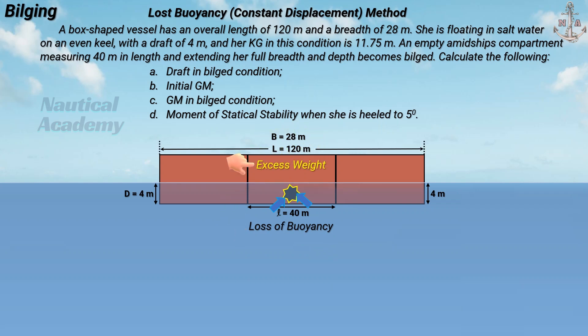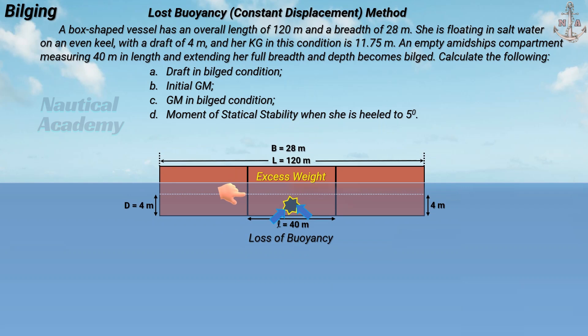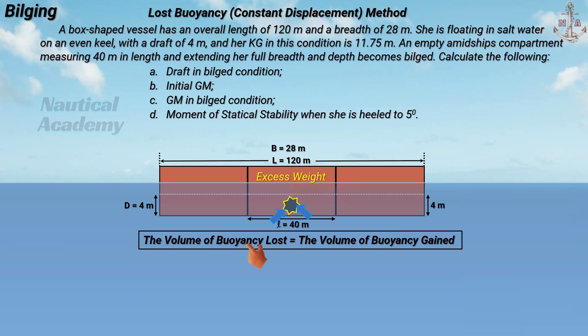When a box-shaped vessel suffers substantial side damage amidships, water floods into the compartment, resulting in a loss of buoyancy. This creates an excess weight force which causes the vessel to sink to regain a volume of buoyancy equivalent to that lost. The constant displacement method is based on this principle: the volume of buoyancy lost is equal to the volume of buoyancy gained. To determine the draft in the bilged condition, we first find the sinkage using this principle.